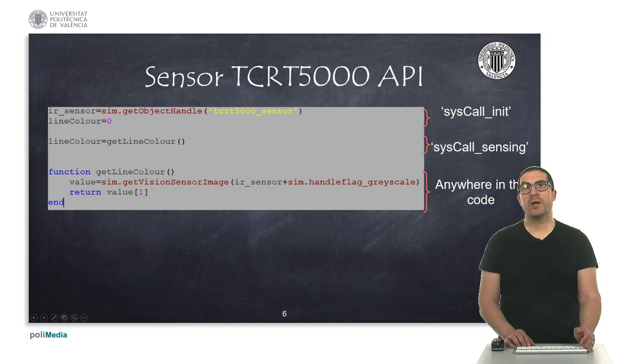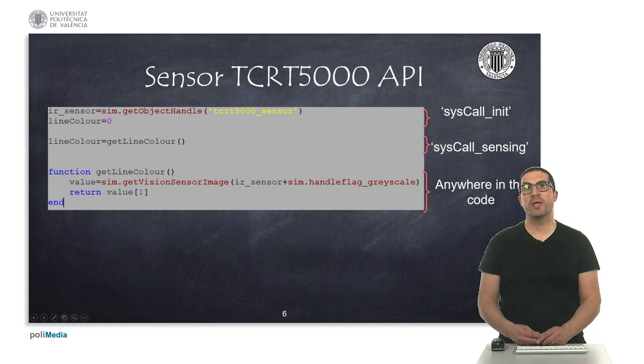In order to be able to access the information provided by the vision sensor, we must first obtain the object handle, as you can see there.